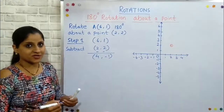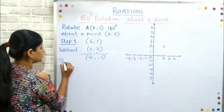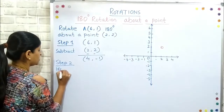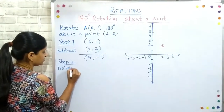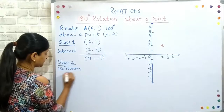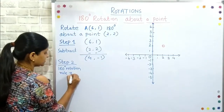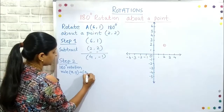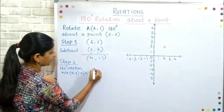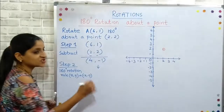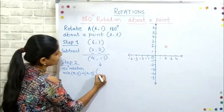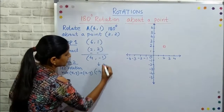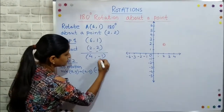Step number two says: apply the rule for 180 degree rotation. The rule says the coordinates x and y become negative x, negative y — that means the coordinates change their sign. So with that rule, coordinate 4 will become -4, and coordinate -1 will become positive 1.